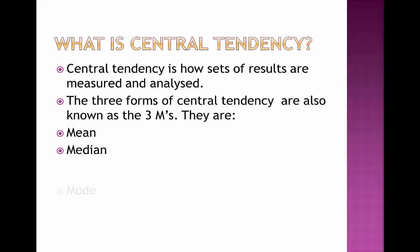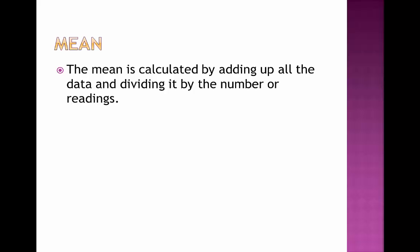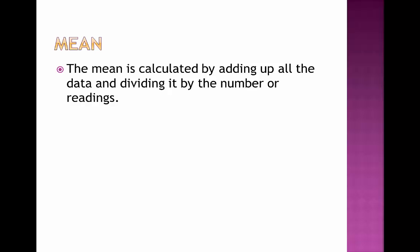These are the mean, the median and the mode. So first we'll start off by looking at the mean. The mean is also known as the average and this is calculated by adding up all the data and dividing by the number of readings.